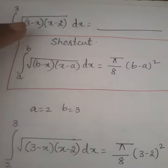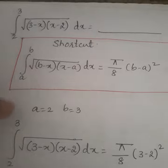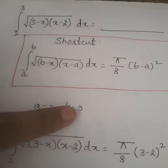So here what I will have to do is compare my shortcut formula with the given problem. Upon comparing both values, I will obtain a equals 2 and b equals 3.